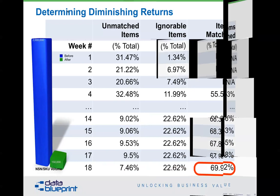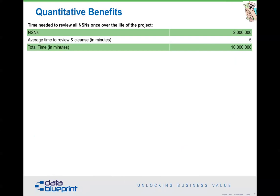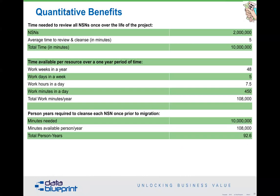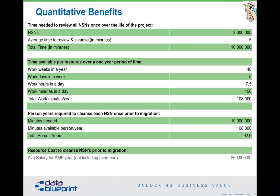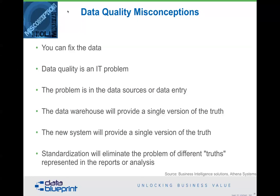Quantitatively: 2 million items at 5 minutes each yields 93 person-years of work at a cost of $5.5 million. After the automated approach, the total dropped to 7 years and $420,000. The most important number is 5, because if you think you can solve this in 5 minutes, you are deceiving yourself. This illustrates the power of the engineering approach and the importance of realistic expectations management.